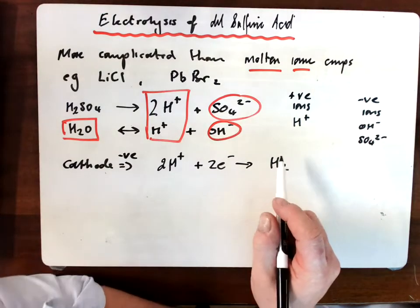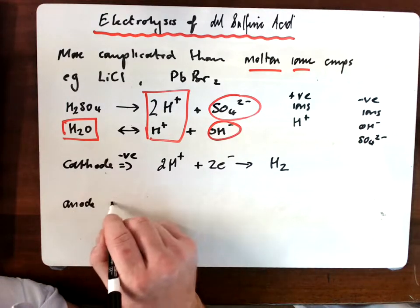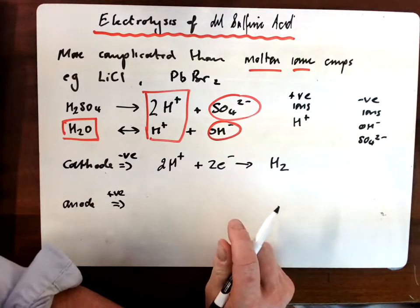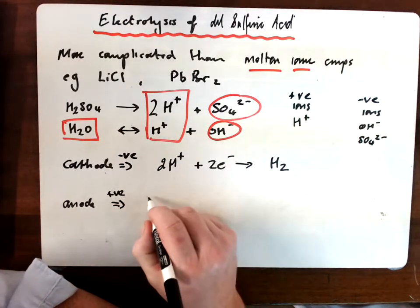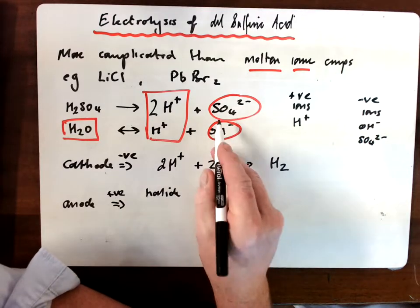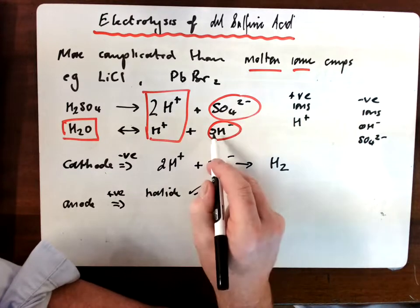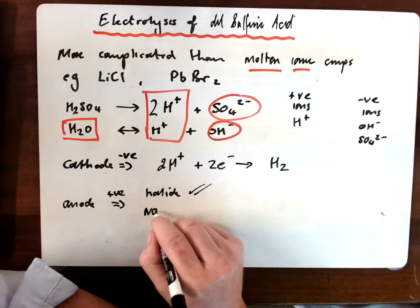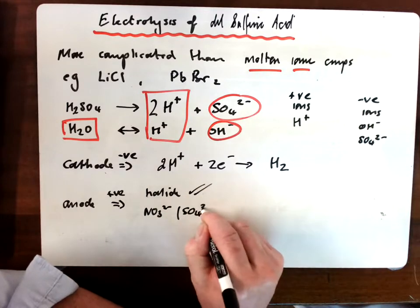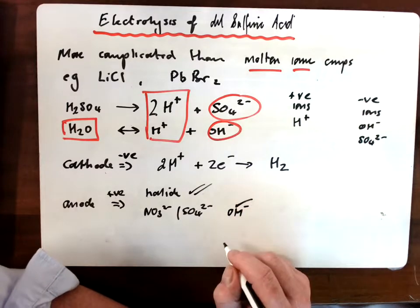With at the anode then, things not quite so straightforward, but still not too bad. This time the rule is quite simple. If we have a halide present in the solution, which we don't here, the halide always gets discharged over the hydroxide. If we have a nitrate or a sulfate, which we do have here, then it's the hydroxide ion that will get discharged.